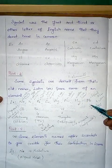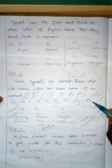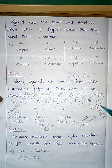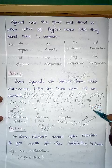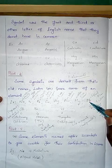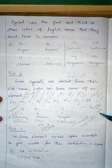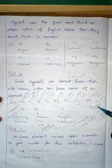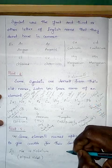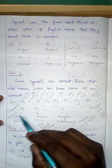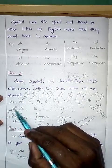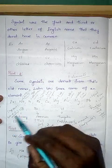Lead has the symbol Pb from the Latin plumbum, meaning liquid silver. In olden days, lead pipes were used in water supply, and from the word plumbum we get the modern word 'plumber.'